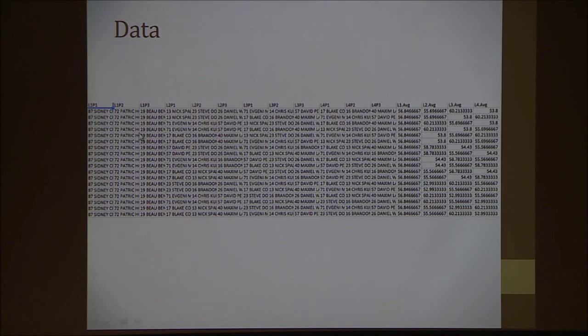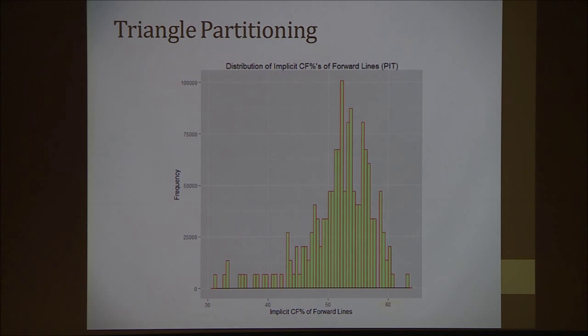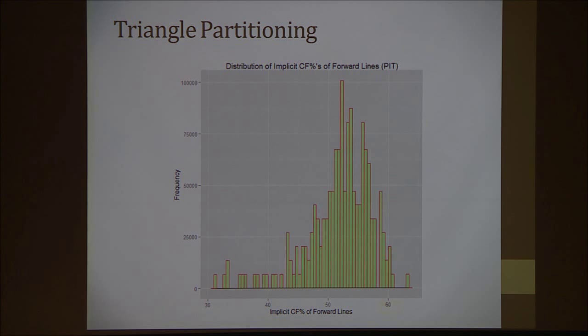When you partition lines like this, this is what the data looks like. Line one: Sidney Crosby. Line one, player two: Patrick Hornquist. Line one, player three: Beau Bennett. We do this for all four lines — there are 360,000 combinations. The columns on the right are the implicit Corsi C4 percentages. With this data we can first look at the distribution of all the implicit Corsi C4 line percentages. This is what the Pittsburgh Penguins' distribution looks like — it's skewed to the left, which is a good sign. Their team Corsi C4 percentage is actually around 54%, and if you look at the distribution, it's right there in the middle.